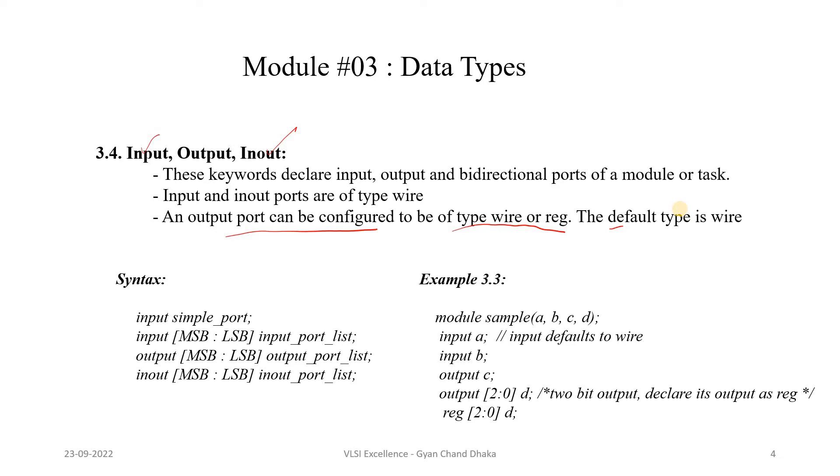Suppose if you are modeling a multiplexer, and while modeling a multiplexer if you are using the behavioral modeling style, then the multiplexer output we need to declare as a reg data type. We will see more examples as we move forward in this course. But just remember here that the output can be wire data type or reg data type depending on our design and how we are modeling the design.